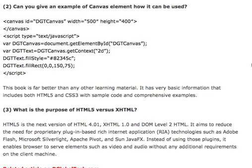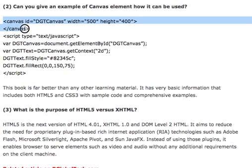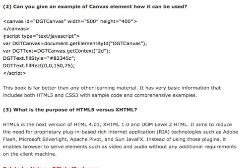Question two, which could be a follow-up: can you give an example of the canvas element and how it can be used? You can see the code on your screen. The canvas element is just a simple ordinary HTML tag. As you can see in the highlighted portion of code, you define it with a canvas ID — in this example we give it canvas ID equals 'dgt-canvas', width equals 500, and height equals 400.